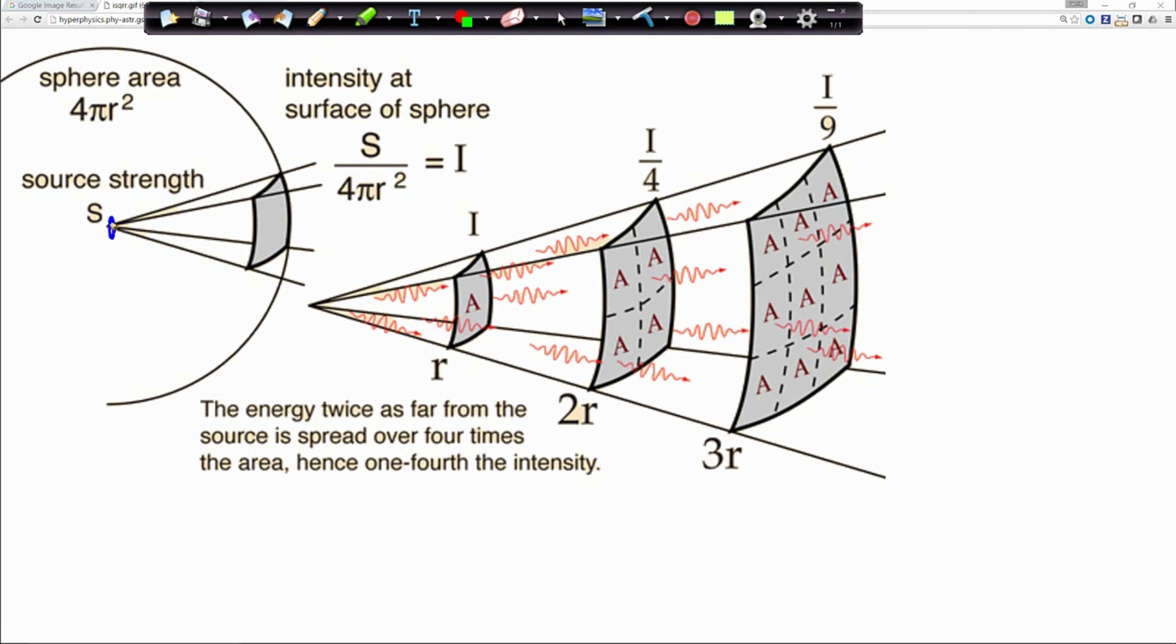Essentially we have a light source here, and you have rays coming out of the light source. All these rays—and in this image they have four rays coming out. As those four rays hit the side of the sphere, you essentially have a square on the side of that sphere. If I remove all my markings, you can see this square right there, and they call that intensity.